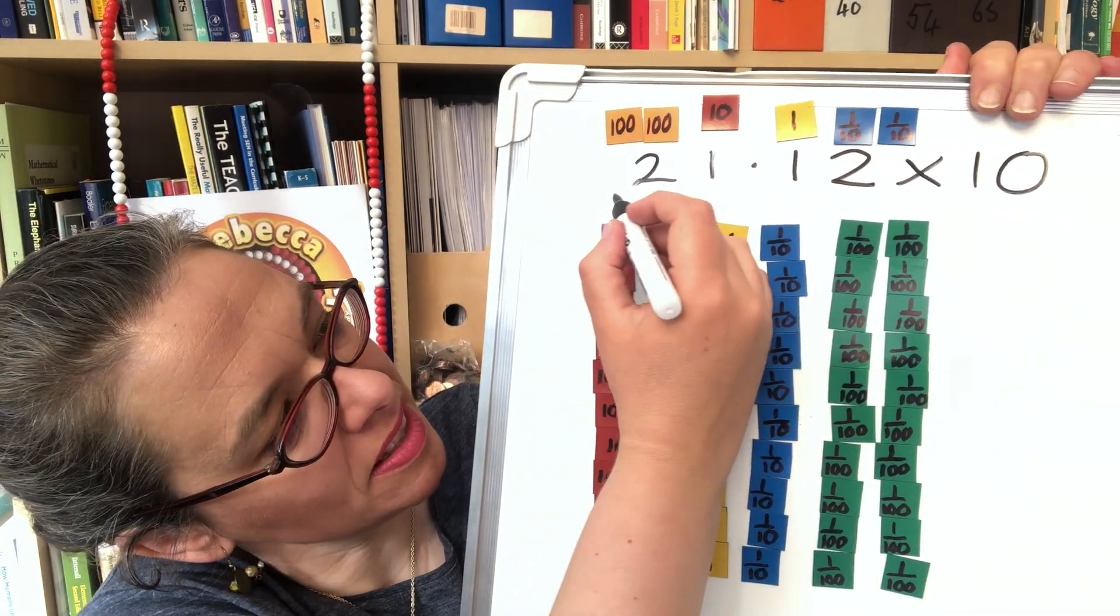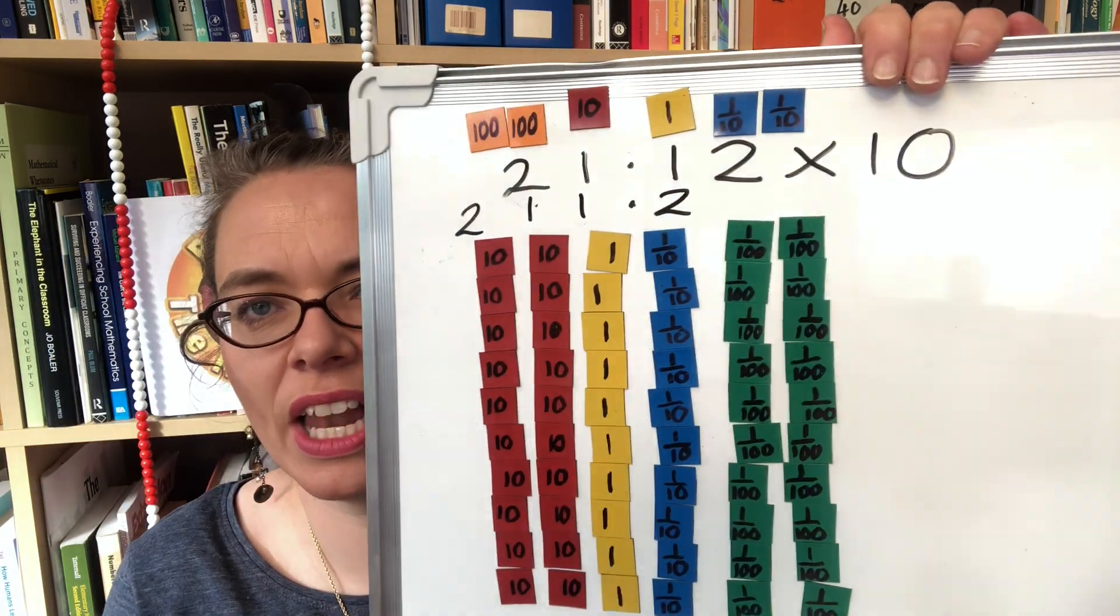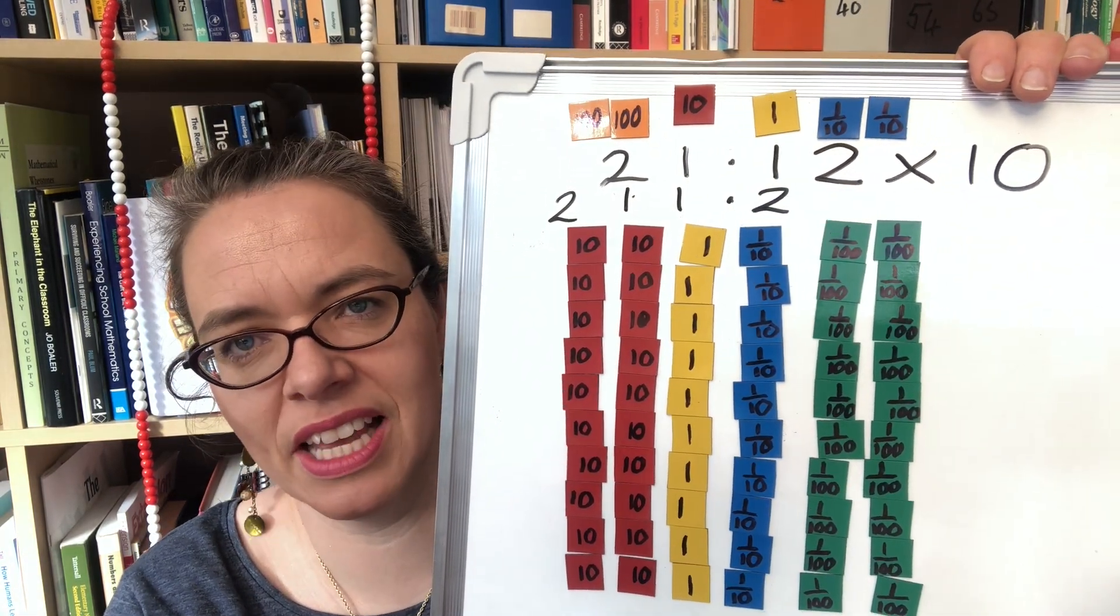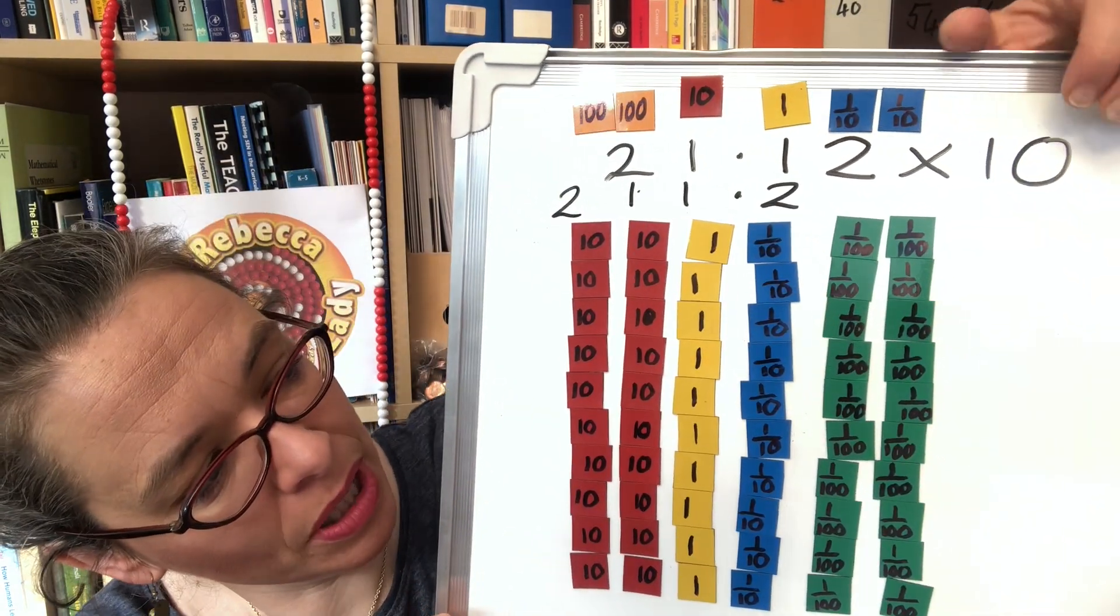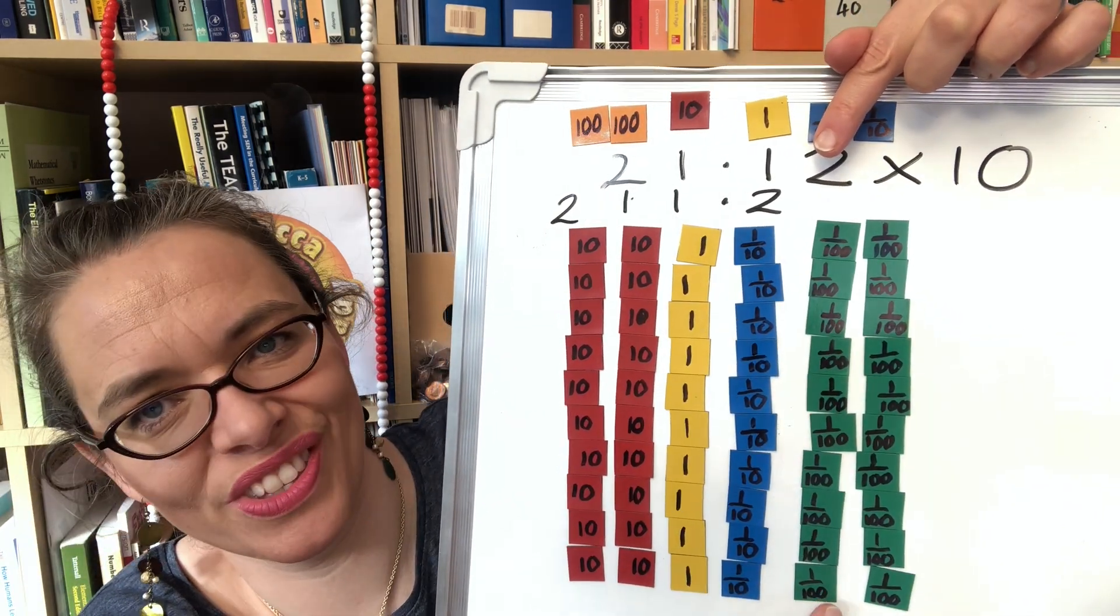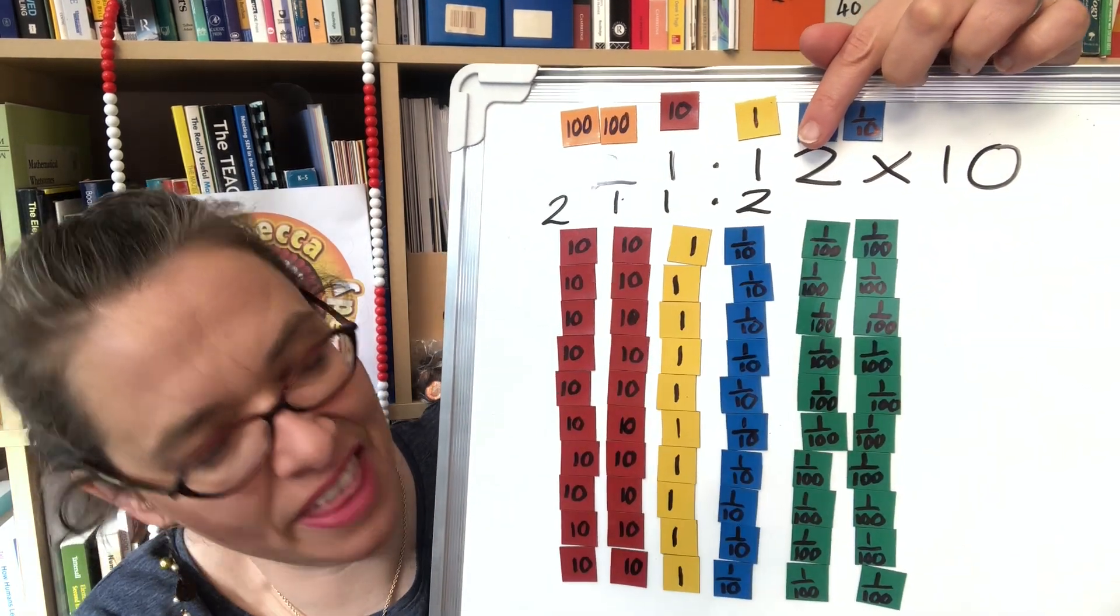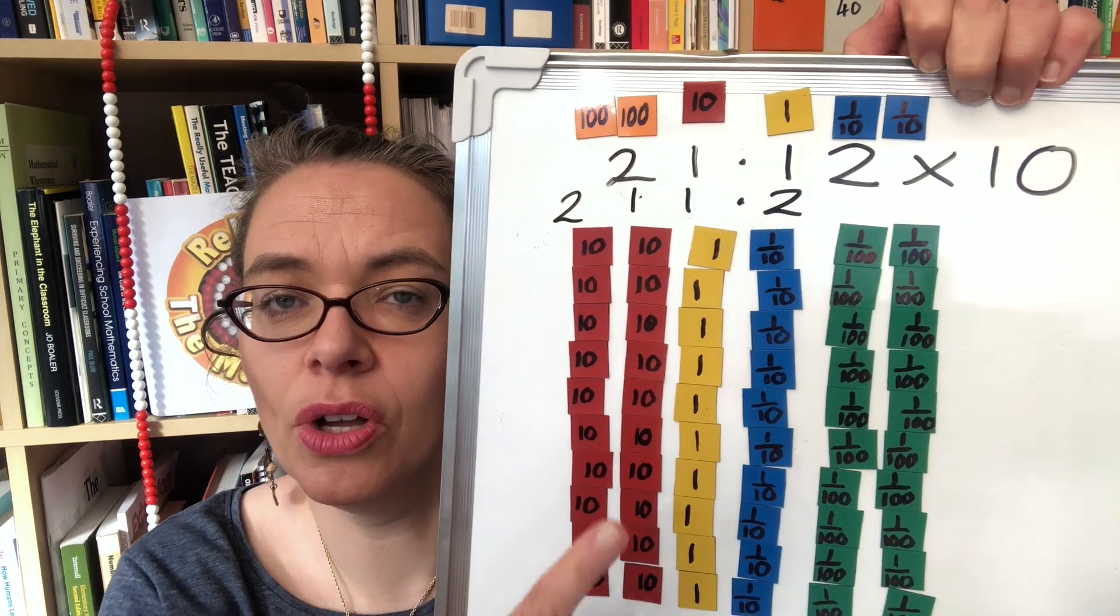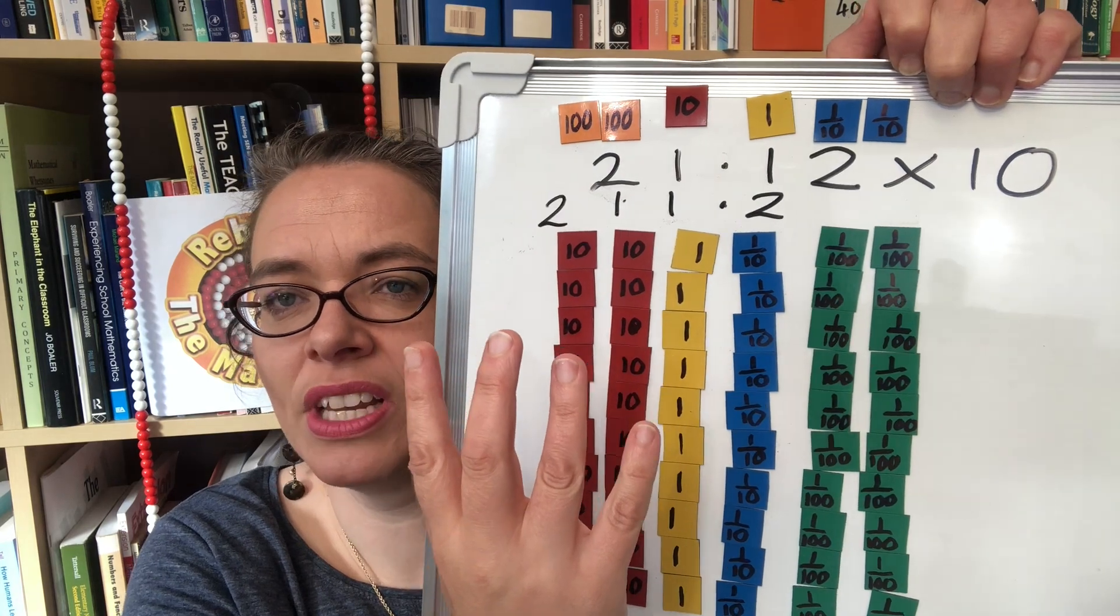And we can write the answer below here showing how the digits have moved to the left and we can start to generalize that to a deep understanding of how the digits always move to the left because for every one hundredth there will be a tenth because 10 one hundredths are going to make a tenth.